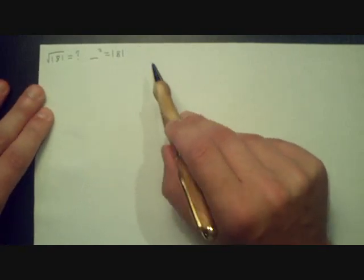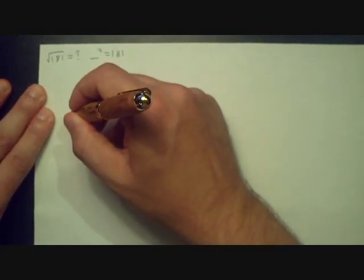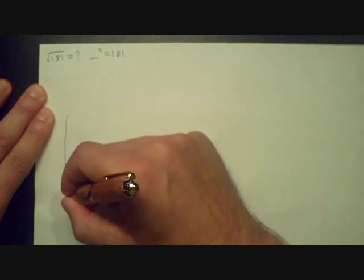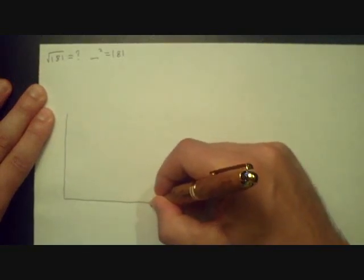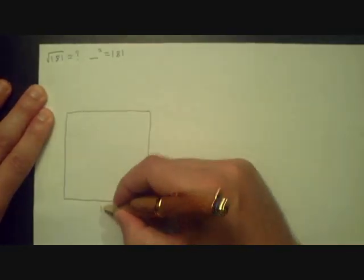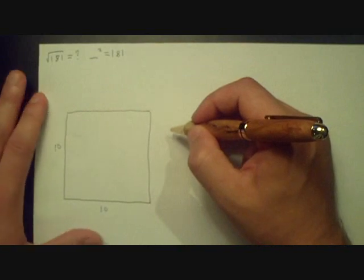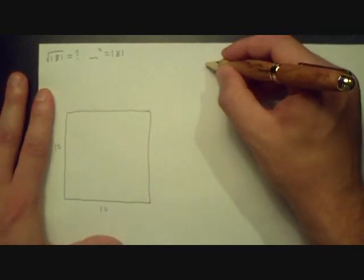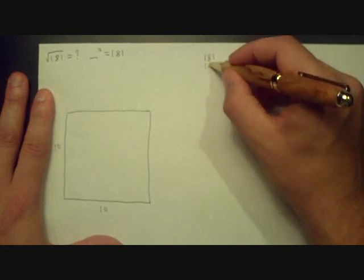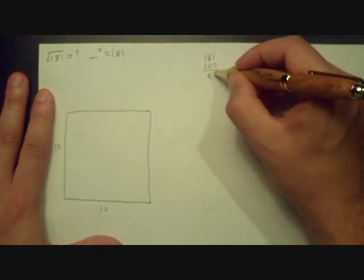Okay, so what I'm going to do is I'm going to actually approximate this by a square of 10 by 10. So there is a square, and it's going to be 10 by 10. So we know what that is, that's 100. I'm going to take over here, I'm going to say, well there's my 181, subtract 100, and see what's left over. 81.